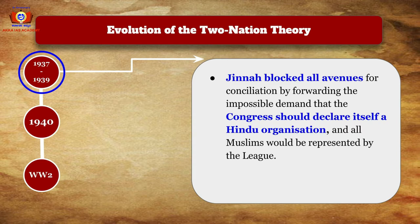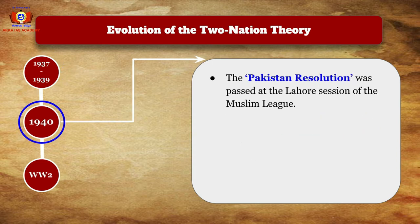Jinnah during this period blocked all avenues for conciliation by forwarding impossible demands — that the Congress should declare itself a Hindu organization and that all Muslims would be represented only by the League. By accepting this, the religious divide would be clearly visible and Jinnah would outshine as a leader among Muslims. In 1940, the Pakistan Resolution was passed at the Lahore session of the Muslim League, making clear that the League wanted only a separate nation for Muslims.